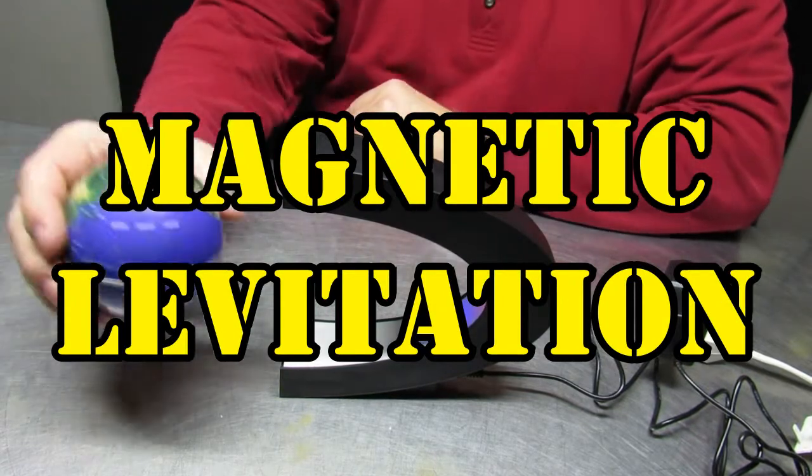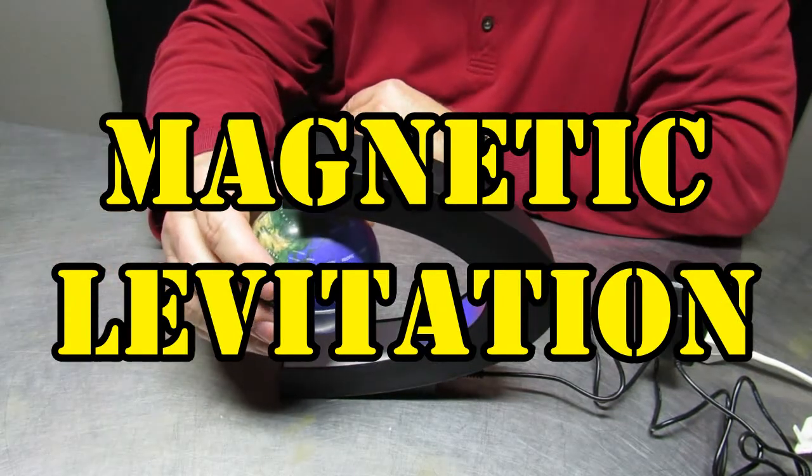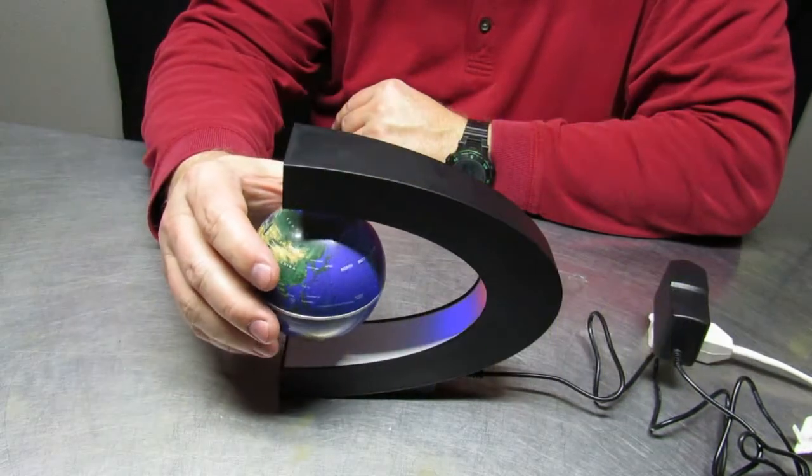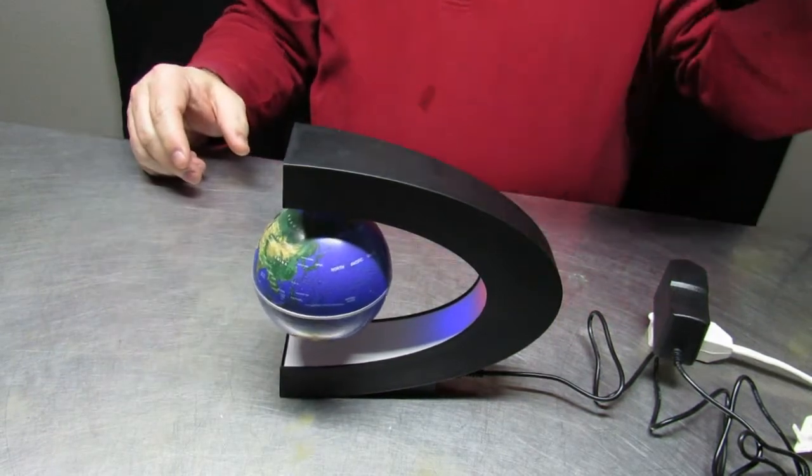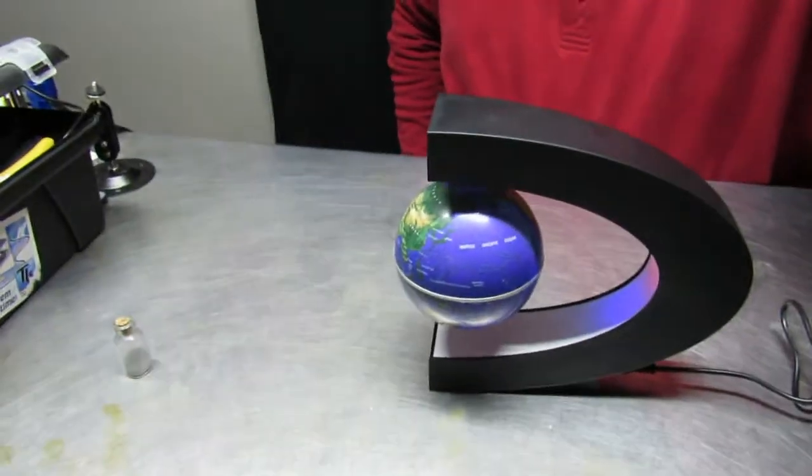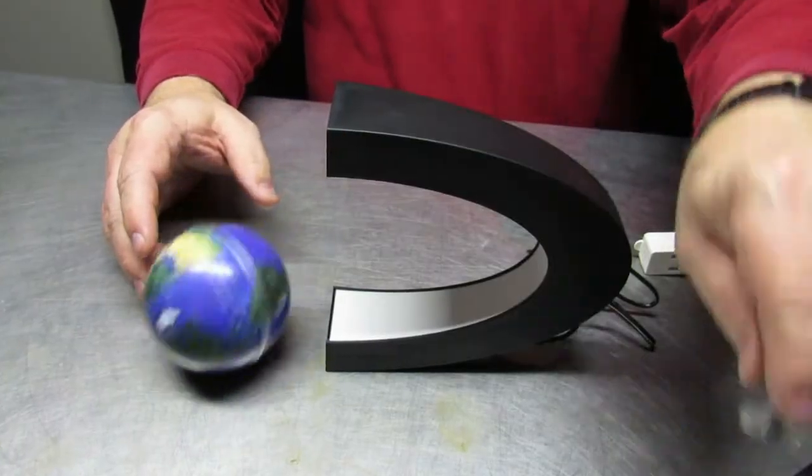Today's two minutes of science is all about magnetic levitation. This is one of those parlor tricks they do for fancy desktop displays. In this case it's a globe in a big magnetic sea.